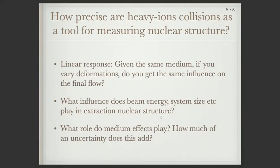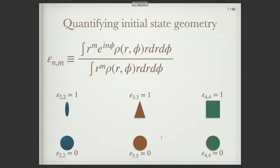What role does it play when we vary beam energies and different system sizes? And what sort of role does this play with nuclear structure? That's something we need to study rather systematically. If we want to do precision measurements, we have to have a good handle on these different issues, what role medium effects play, what kind of uncertainty that adds, and whether there are measurements we can use to cancel that out.